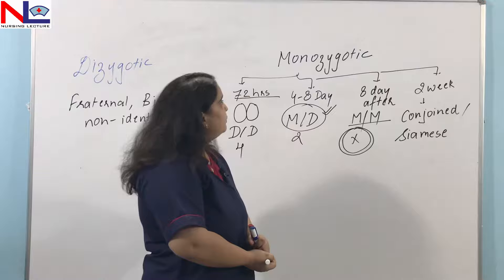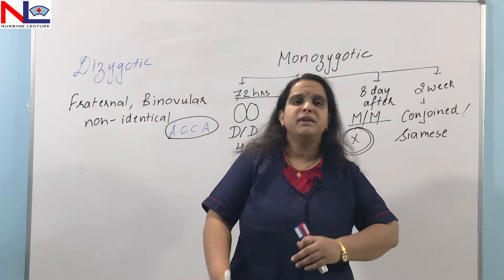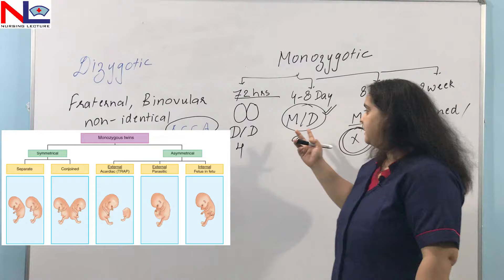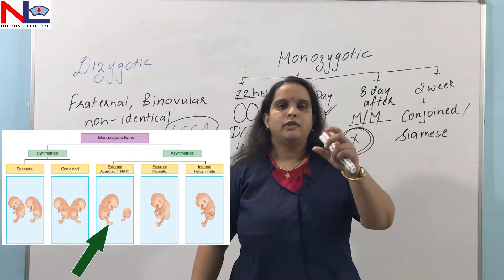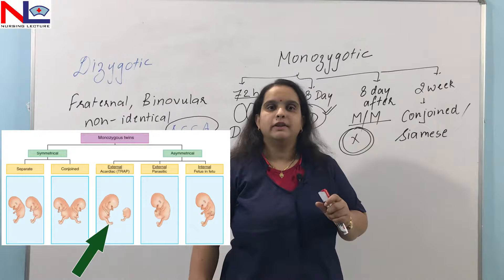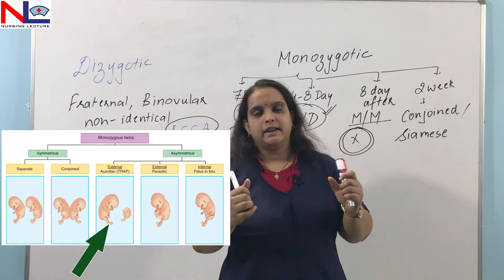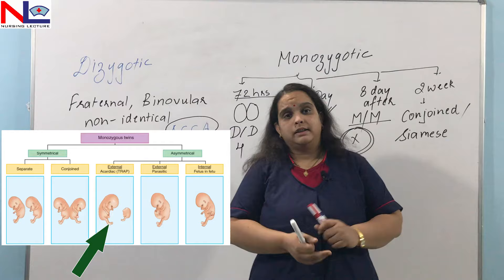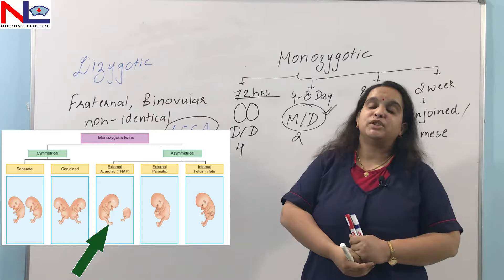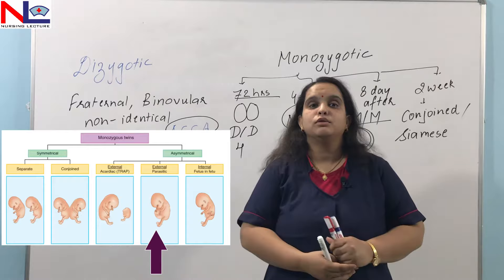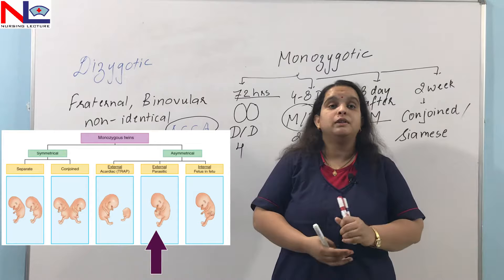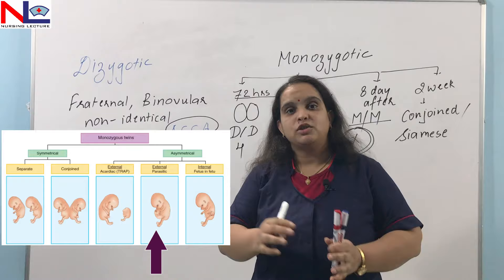In monozygotic twins there may also be symmetrical and asymmetrical division. In symmetrical division we see DD, MD, MM, or conjoined varieties. In asymmetrical division, one fetus is normal and the other is smaller. The smaller one is the acardius variety, in which major body parts are absent, the fetal heart rate is completely absent, and that fetus relies entirely on the normal one for nutrition.